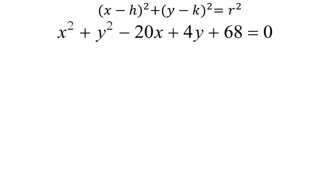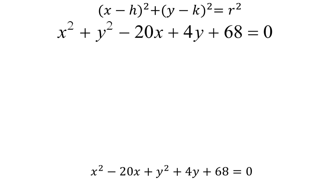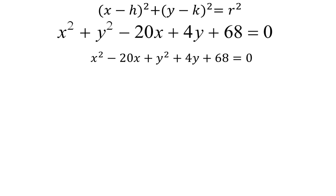The first step to completing the square is to get all of your x variables together and all of your y variables together. I would absolutely suggest that you put all of your x variables first and then all of your y variables second. So I'm going to move the negative 20x next to the x squared, and the 4y next to the y squared, and then I kept 68 where it is.